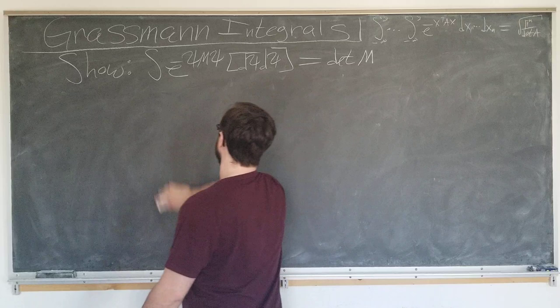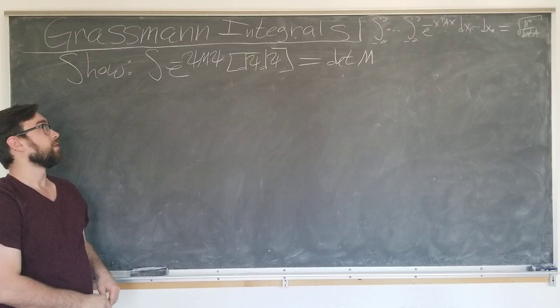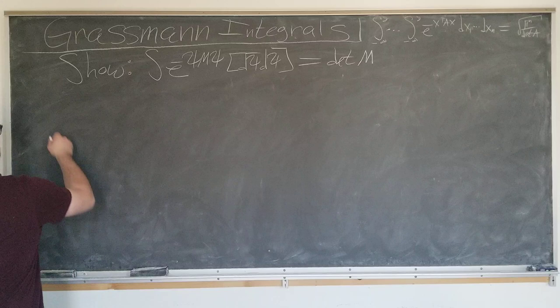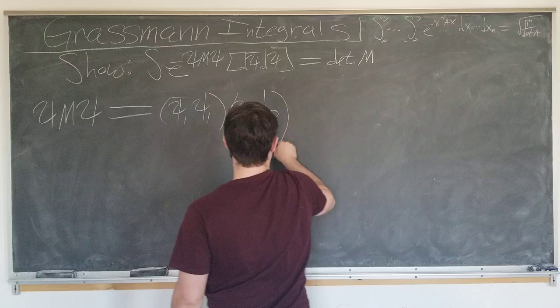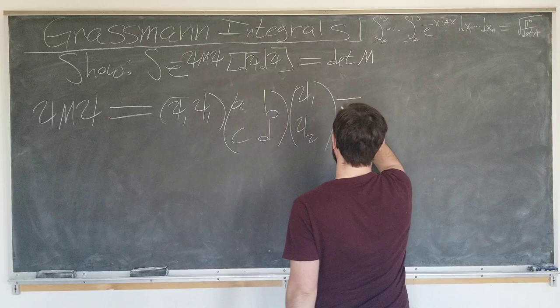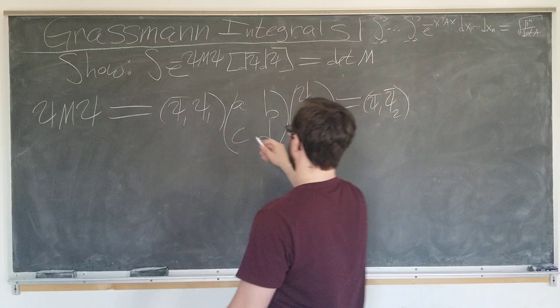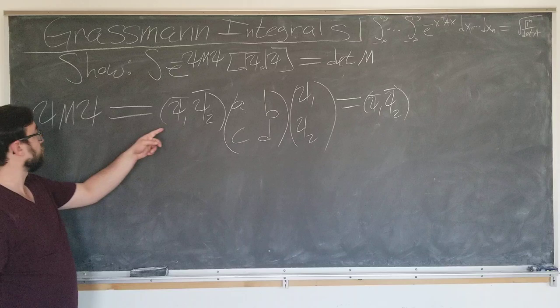Alright, so first we want to evaluate the parameter that we're going to expand. And we're going to be expanding in psi bar m psi. Let's just evaluate this and see if it's zero. We'll go from there. Alright, psi bar m psi is equal to psi one bar psi one, A, B, C, D, psi one, psi two. I'm multiplying these two matrices together. Psi one bar psi two bar. Sorry, I made a slight mistake here.